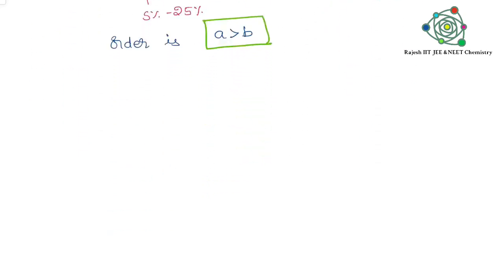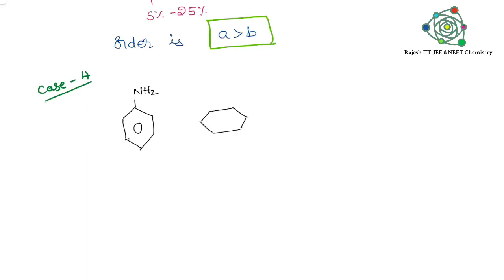Now coming to the fourth case, with respect to number of benzene rings. First I'm taking aniline, which has only one benzene ring. Second one has two benzene rings attached, and third one has three benzene rings attached. That means total hydrogens are replaced by benzene rings. As the number of benzene rings increases, resonance structures also increase.